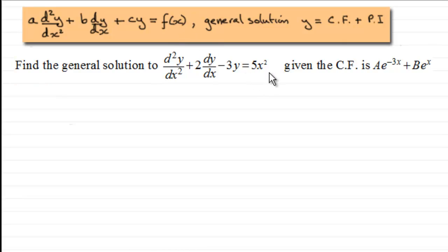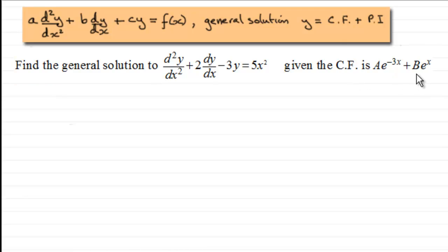We've got this example: find the general solution to d²y/dx² + 2(dy/dx) − 3y = 5x². We're given that the complementary function is Ae^(−3x) + Be^x. If you're unsure how I got this result, click on the link here and it will take you back to the video where we derived this complementary function. On that basis, we need to start with our particular integral.